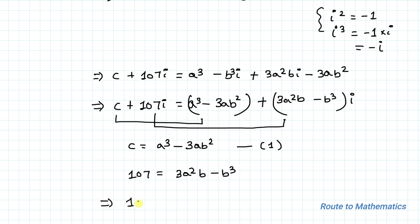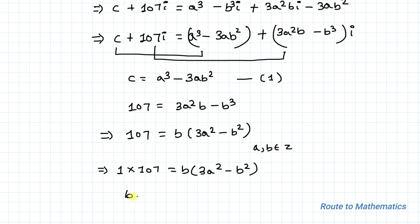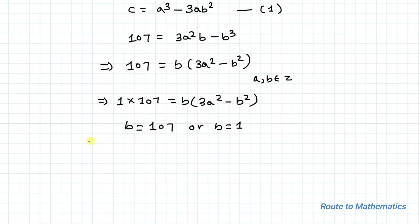Equation 2 can be written as 107 equals b times 3a squared minus b squared. Since a and b are positive integers, b must be a divisor of 107. Since 107 is a prime number, we can write 107 equals 1 times 107, so b is either 107 or b equals 1.